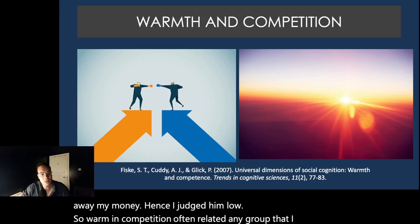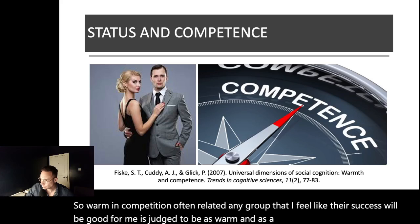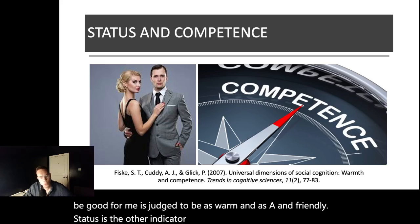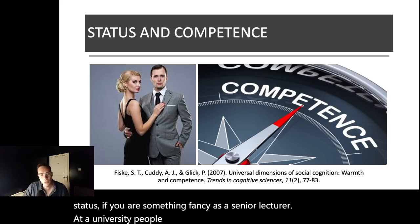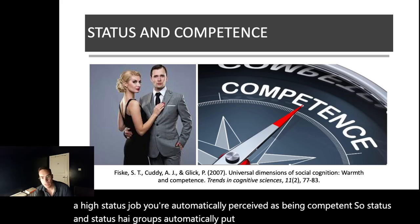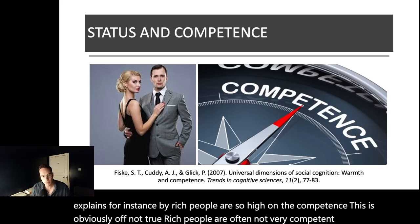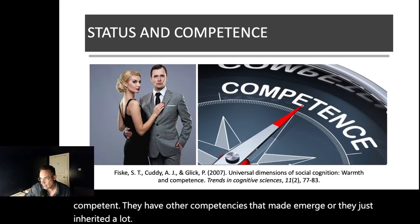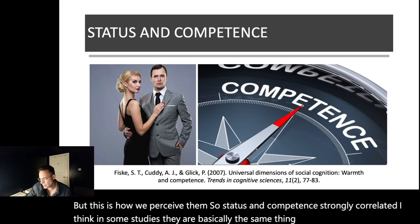Any group that I feel like their success will be good for me is judged to be as warm and trustworthy and friendly. Status is the other indicator of competence. So if you have something high status, if you are something fancy as a senior lecturer at a university, people automatically think that you are competent. So if you have a high status job, you are automatically perceived as being competent. So status and high status groups are automatically put into the highly competent category. That explains, for instance, why rich people are so high on competence. This is obviously often not true. Rich people are often not very competent. They have other competences that made them rich or they just inherited a lot. But this is how we perceive them. So status and competence are strongly correlated. In some studies they're basically the same thing. It's like you can't say whether the person judged status or competence.